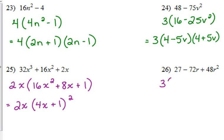26 has a GCF of 3. So when we take out the 3, we've got 9 minus 24r plus 16r squared. 9 minus 24r plus 16r squared is a perfect square trinomial because 9 and 16 are perfect squares. 3 times 4 is 12. 2 times 12 is 24. This is a perfect square trinomial. So we've got 3 minus 4r squared is the factor of it.